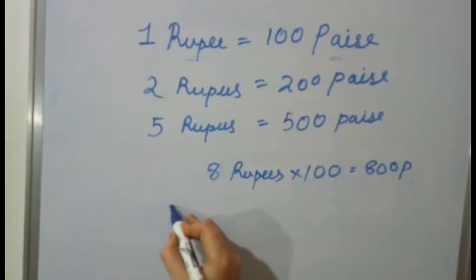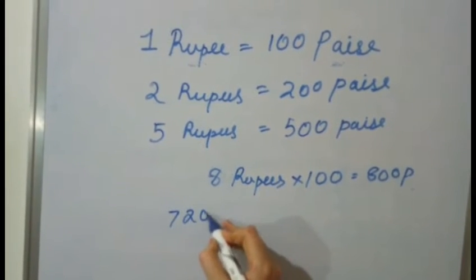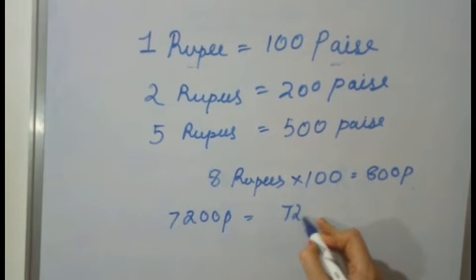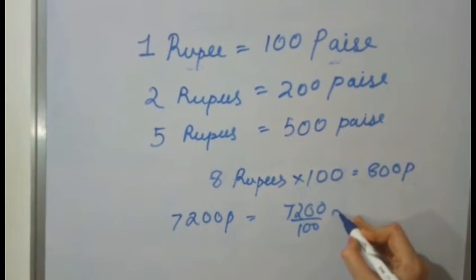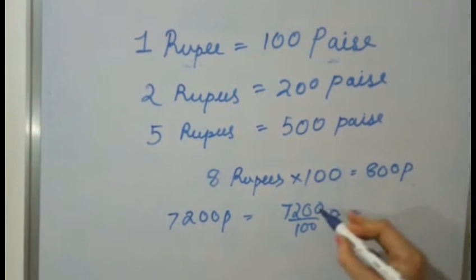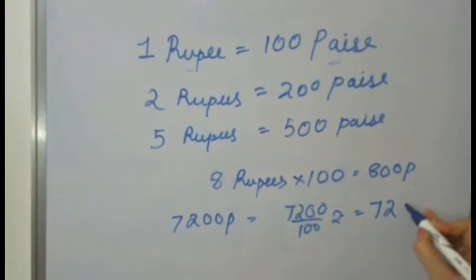Suppose, here it is 7200 paise. We have to divide with 100. Then, we will get 72 rupees.